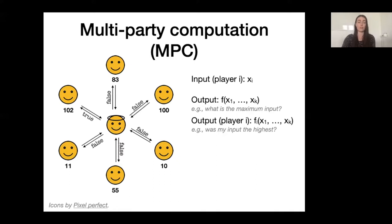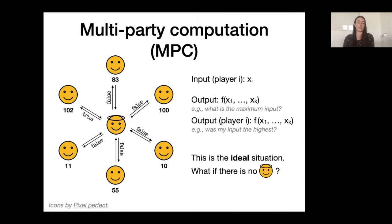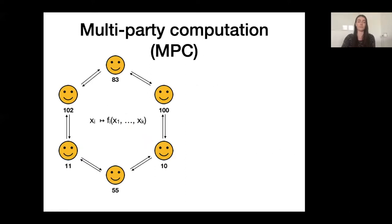The functionality I describe here with the trusted third party is the ideal setting, but in reality such a trusted third party is of course not generally available. So an MPC protocol tries to achieve this functionality without the trusted third party. We still have our six players, but now they only communicate with each other — everybody can talk to everybody.